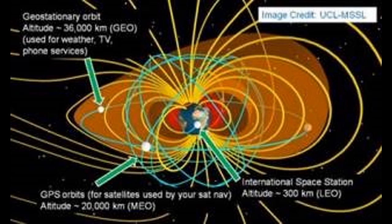It is only by properly understanding the magnetosphere and how it interacts with the solar wind that we can accurately predict and mitigate the effects of space weather on our society.